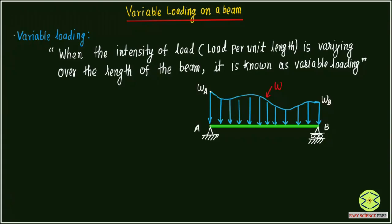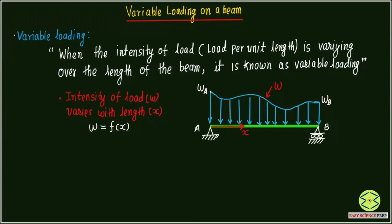If we take point A as the origin and x as the coordinate along the length of the beam, the intensity keeps changing as we move along the beam. We can write that the intensity of load (small w) varies with x — that is, w is a function of x. This kind of loading, where intensity is a function of x, is called variable loading.